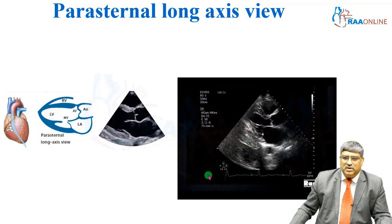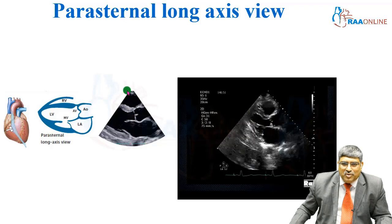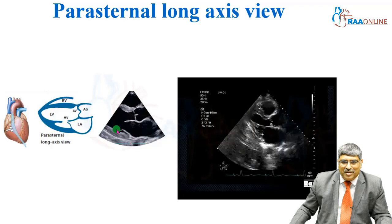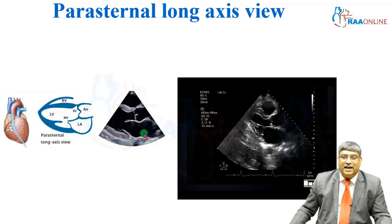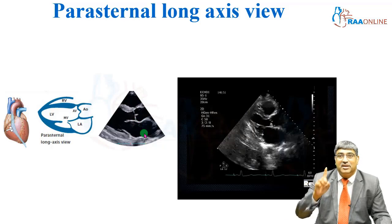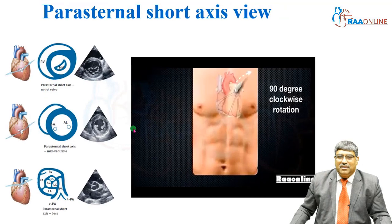This view is very important in measurement mode. Here you can measure the dimension of the right ventricle, the septum, and the posterior wall dimension of the left ventricle. If you place a cursor across the aorta, you can measure the aortic diameter and the LA diameter. This aortic-LA diameter is very, very important in assessment of the left ventricle.